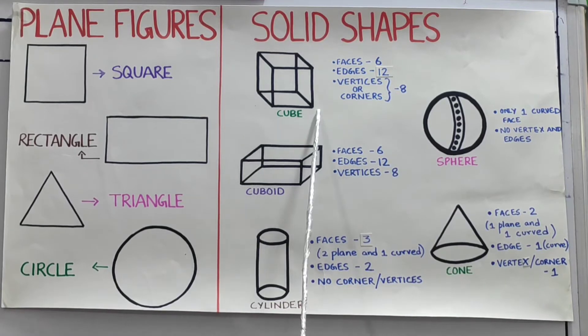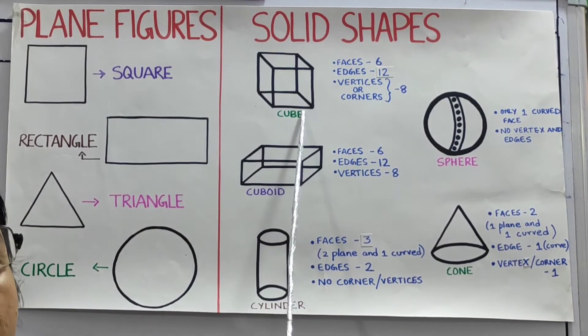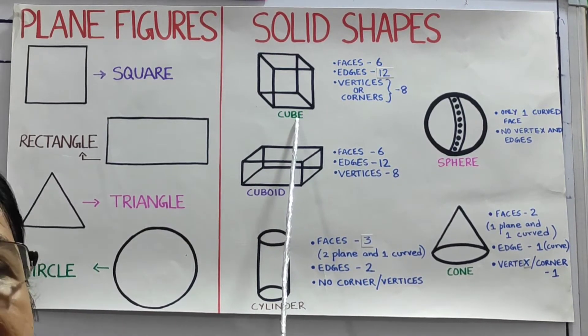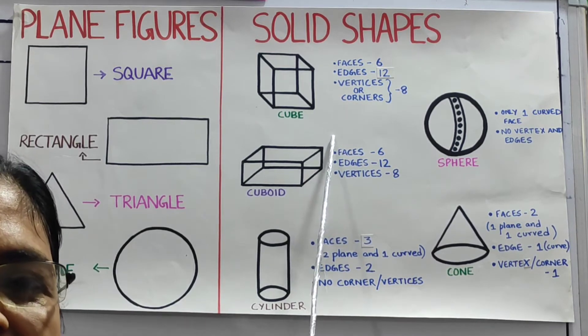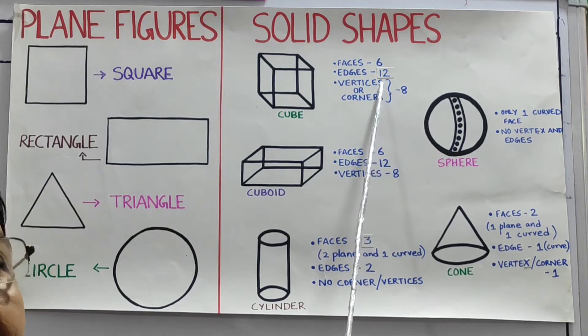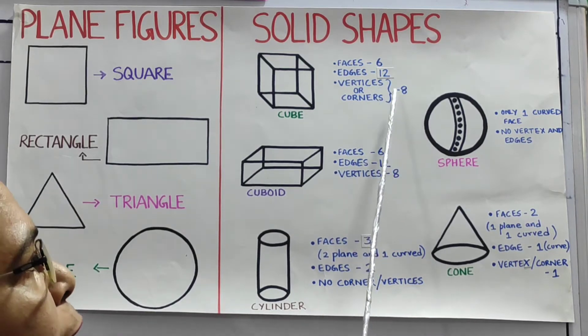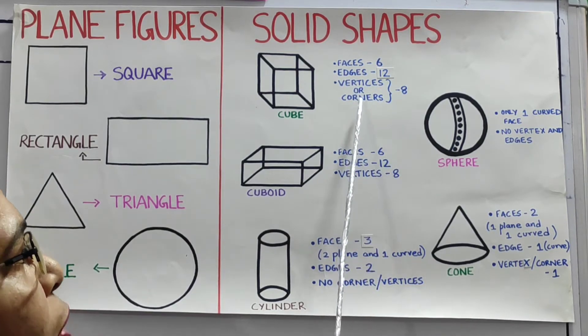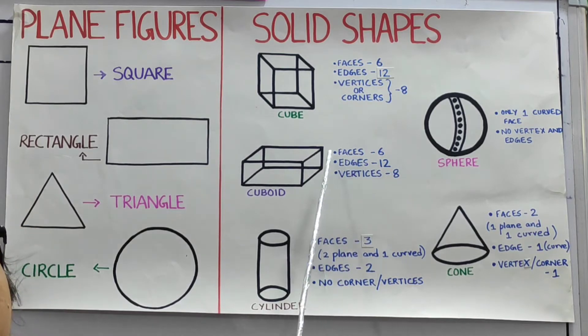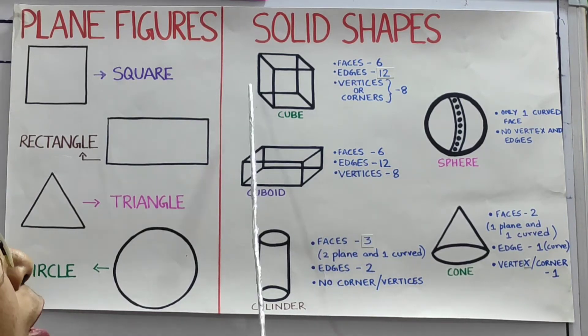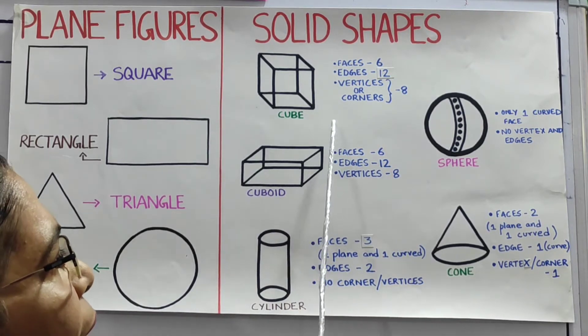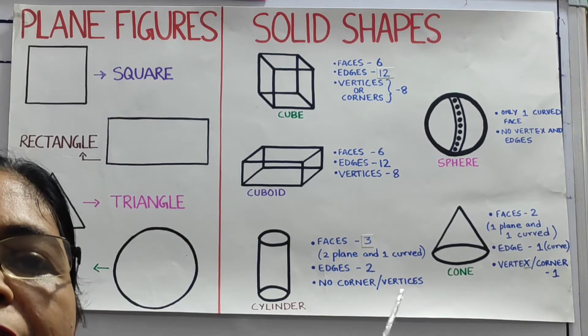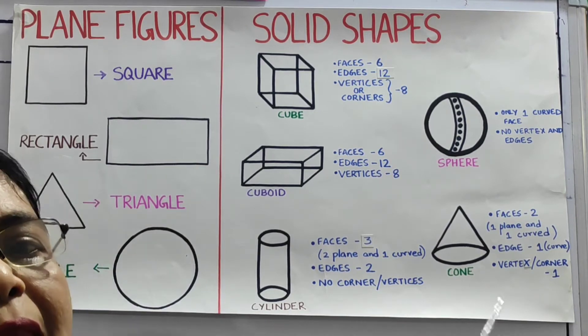It's a cube. A cube has six plain surfaces called faces, twelve edges and corners or vertices. Each face of a cube is a square and the twelve edges are equal in length.